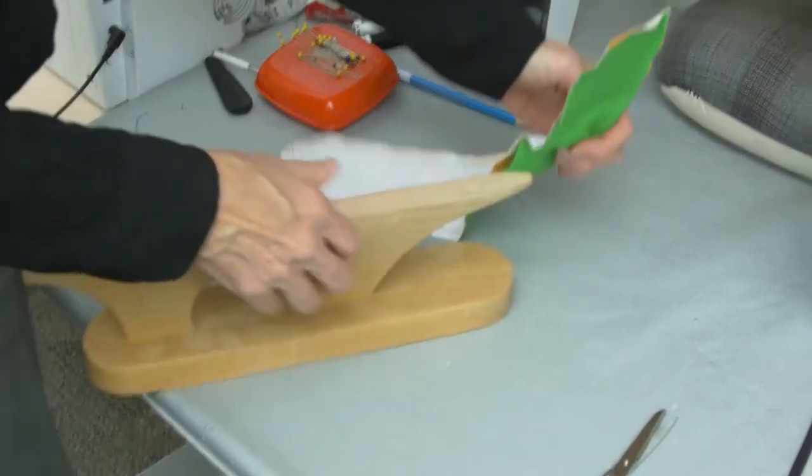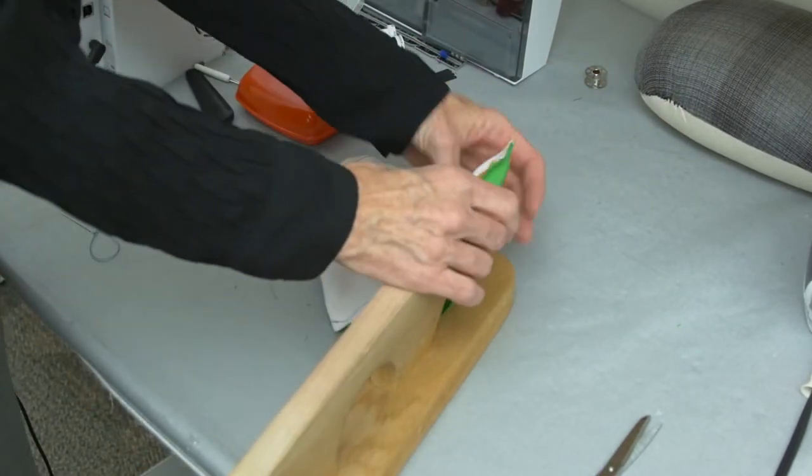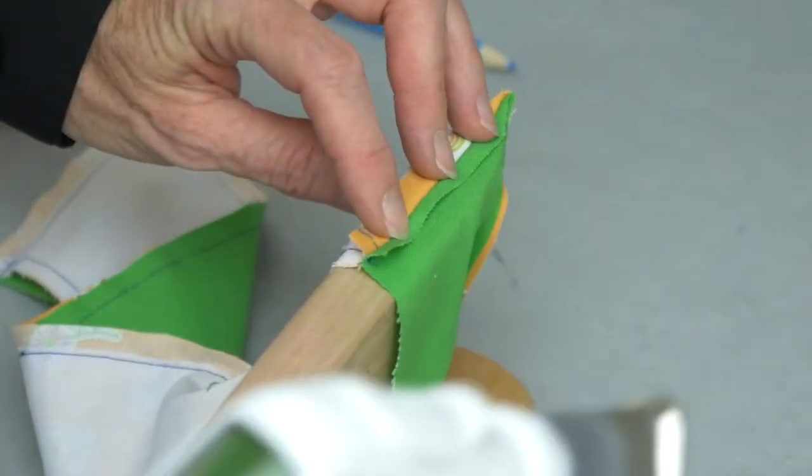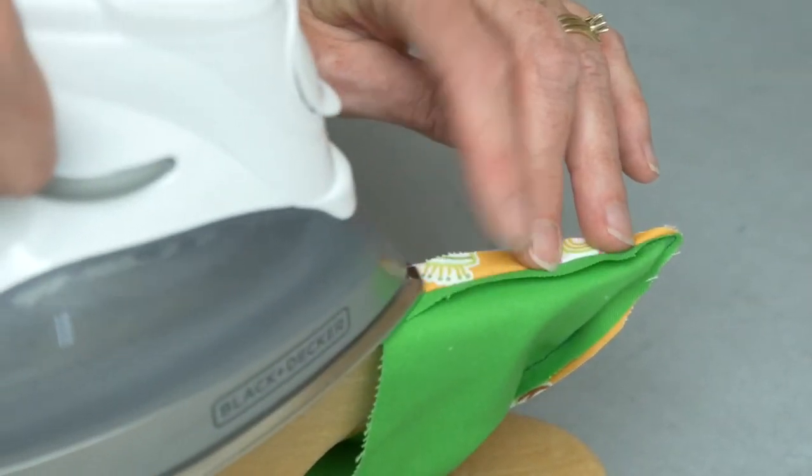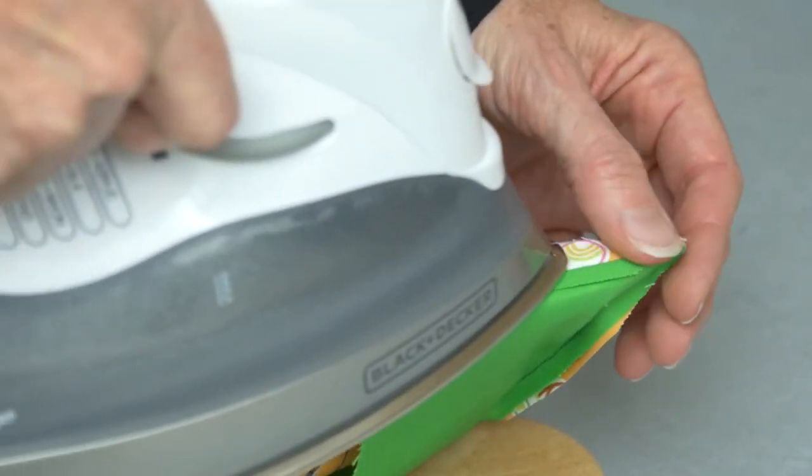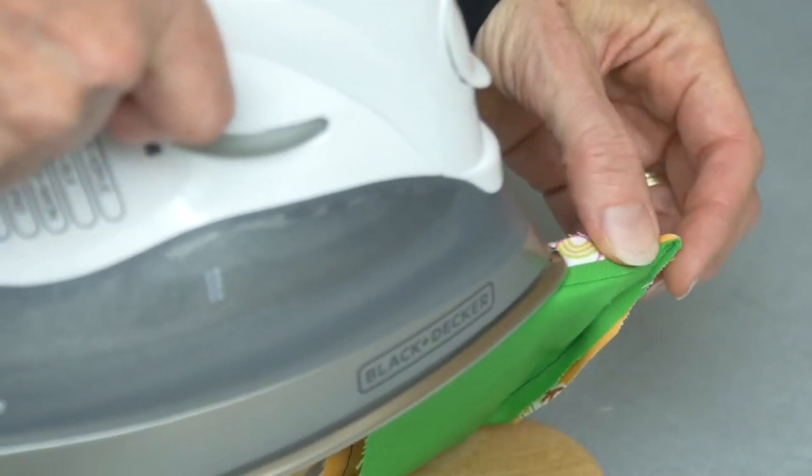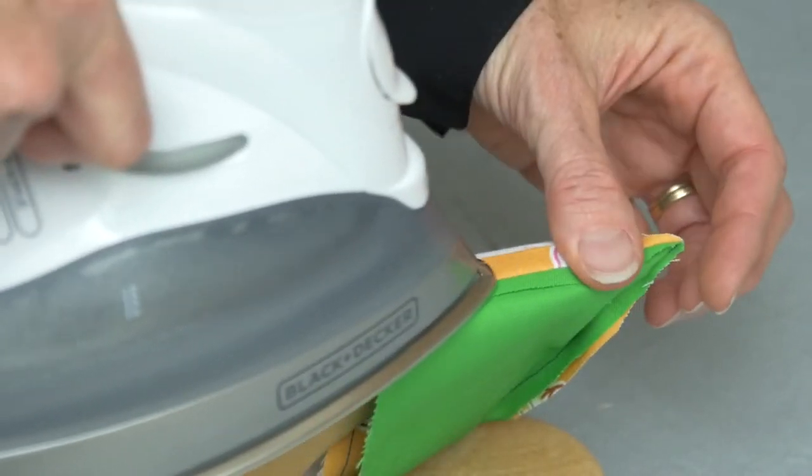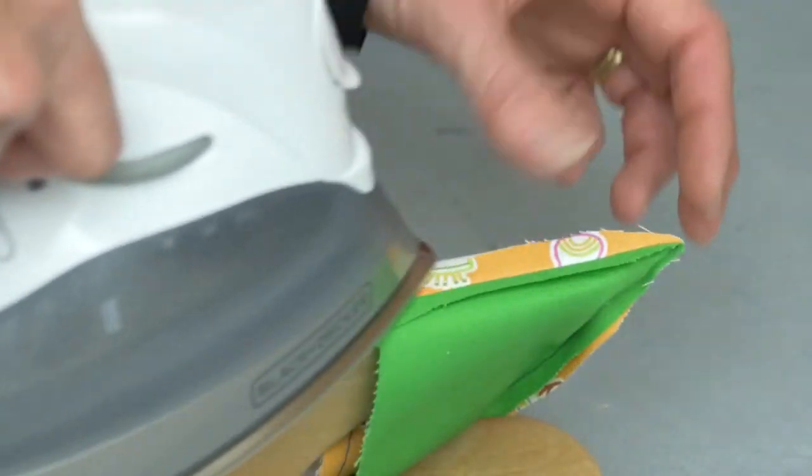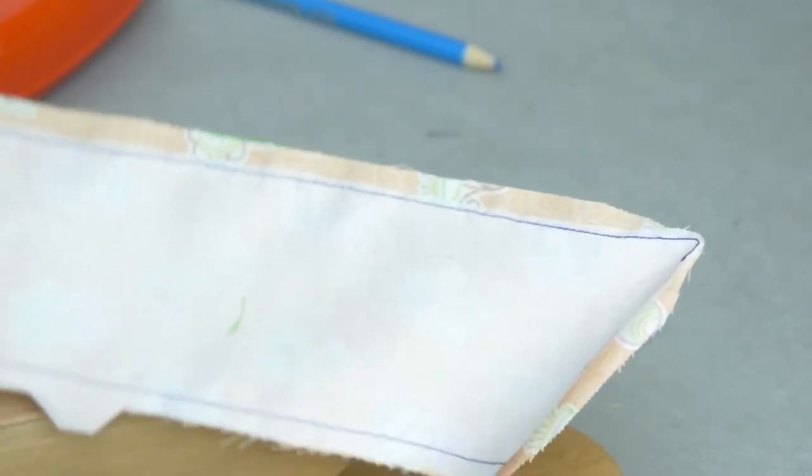We're going to press it on a point presser. I will quite often actually press first and then trim and grade and then press again, because if you've trimmed really close it can become somewhat difficult to get the seam open without putting your fingers really close to the tip of the iron and you risk burning yourself. So I will quite often press it open, then trim and grade, and then press it again.